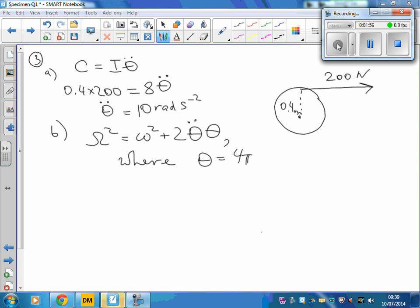Let's substitute the values that we are given to have omega squared equals initial angular velocity is 0. So on the right hand side of this equation we have 2 times 10, which is the angular acceleration, multiplied by 4π. So from this equation we have omega equals square root of 80π radians per second. And that's the final answer.